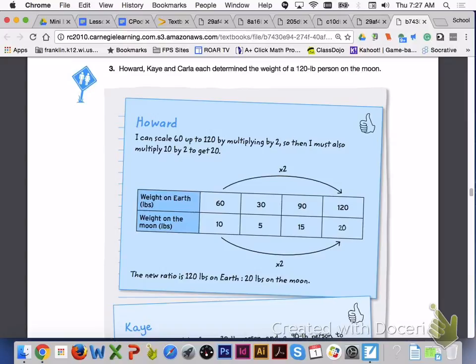Turn to page 344 and let's take a look at Howard's example. Again, one way to determine an equivalent ratio in a table is to scale up. Howard multiplied 60 and 10 by 2 in order to get the equivalent ratio of 120 to 20. His scaling up factor was 2.